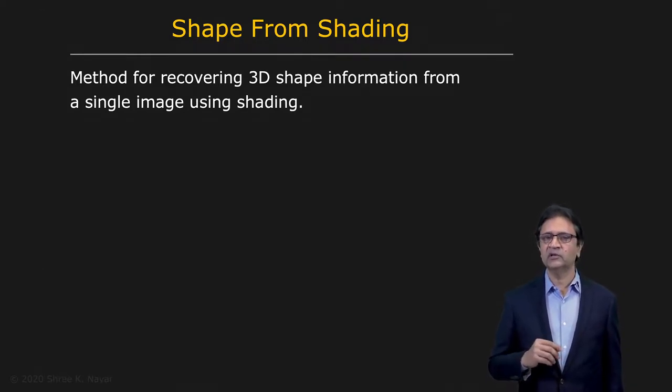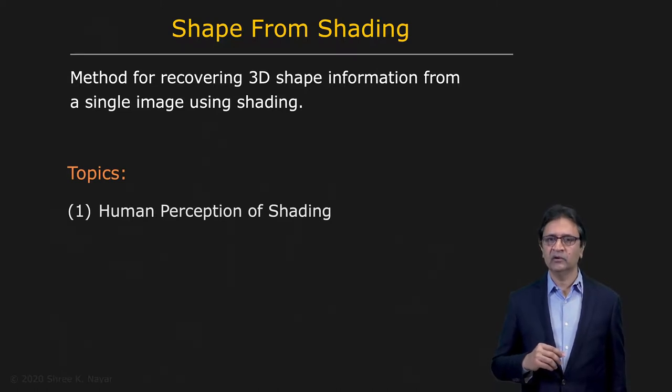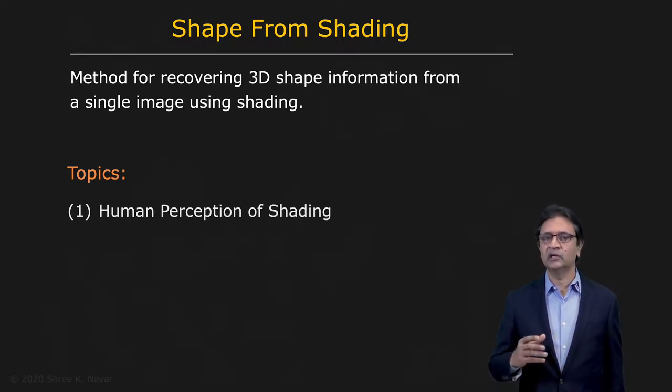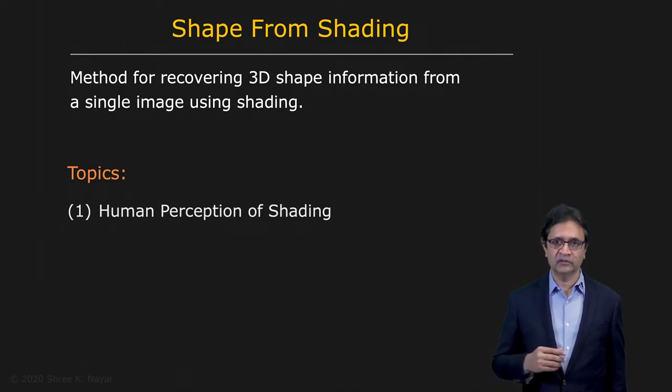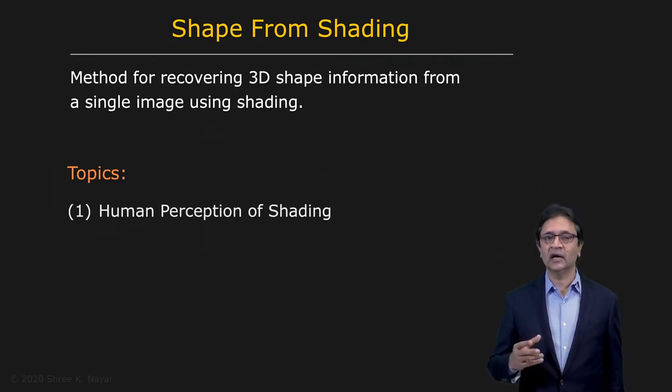So first, we're going to take a look at human perception. We know that you and I are pretty good at looking at the shading of an object and figuring out at least qualitatively what the shape of the object is. So let's take a look at how this is possible for humans. It turns out that the only reason we're able to do this is because we invoke a series of assumptions.